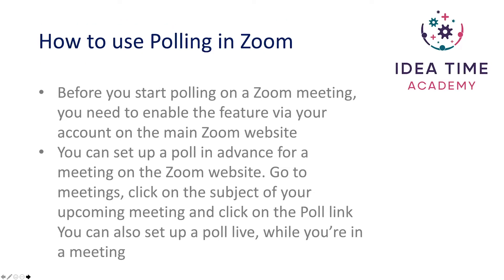Before you start polling on a Zoom meeting, you need to make sure that the feature is switched on via your account on the main Zoom website. You can also set up a poll in advance for a meeting on the Zoom website — go to Meetings, click on the subject of your upcoming meeting and click on the poll link.